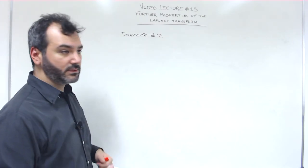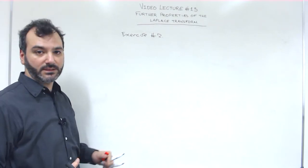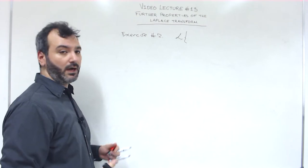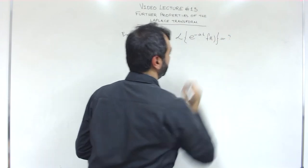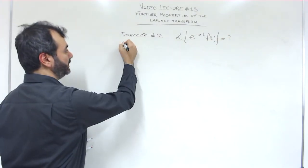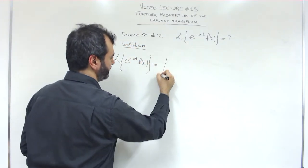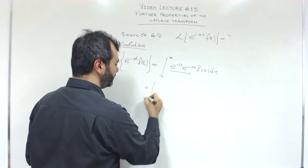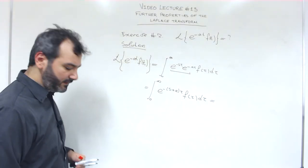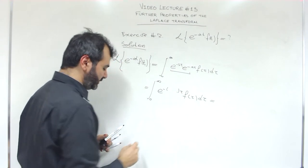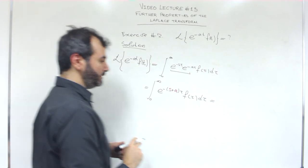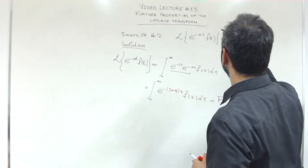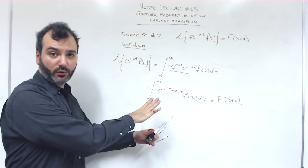Exercise two: let's continue the warm-up with one more exercise before we state the main result for today. The Laplace transform of a product of two functions can be very difficult to evaluate. However, the Laplace transform of e to the minus at times f(t) is very easy. Using the definition, we see two exponentials that we can combine, and the only difference from the Laplace transform of f is that instead of s we have s plus a. So this is simply F(s + a). This is the second property proved today.